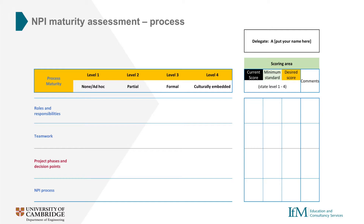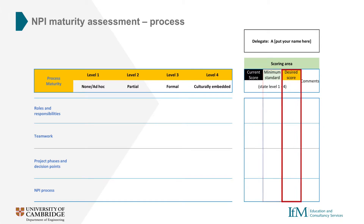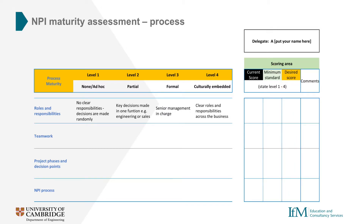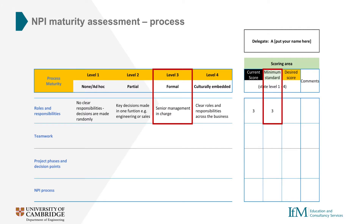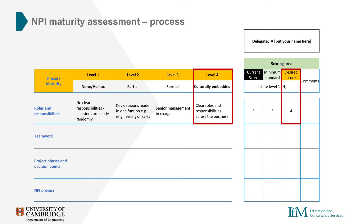For each category, we should assign three scores: first, we assess where we are now; second, what we think our minimum standard should be; and finally, where we think we need to get to. As an example, let's take a look at the first area in the process section: roles and responsibilities. As an engineer in Great Ideas Limited, we might think that right now our senior management are firmly in charge and score this as a level three. We probably also think this is the minimum standard - it works for us, but falling into a more disorganised state would really damage our process. Finally, we need to think about where we would like to be. We can see that a more embedded and less directive approach, where roles and responsibilities were clearly defined, could be a big help, and hence we set our desired score as a four.